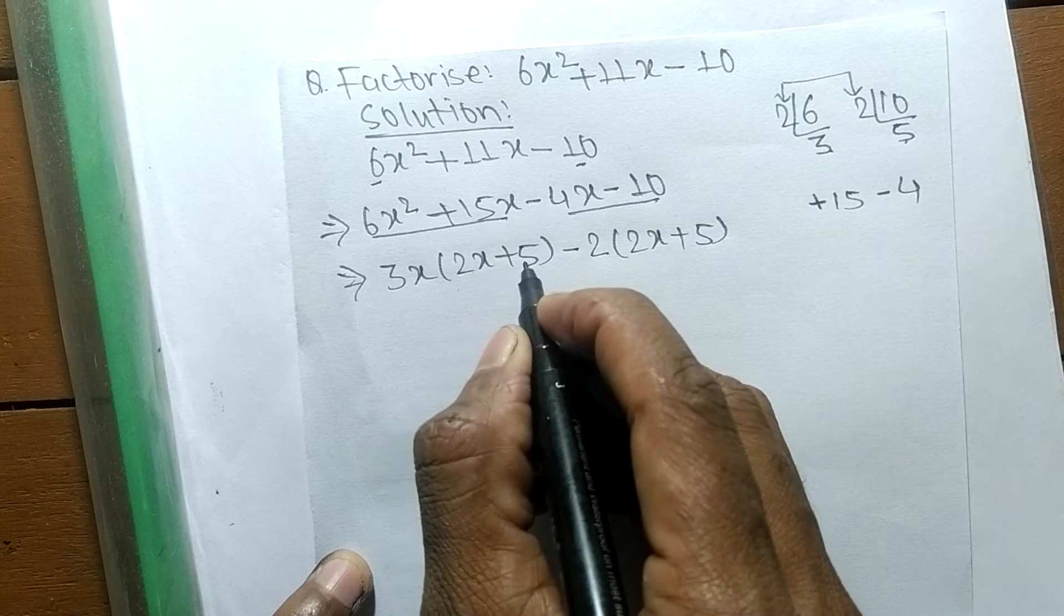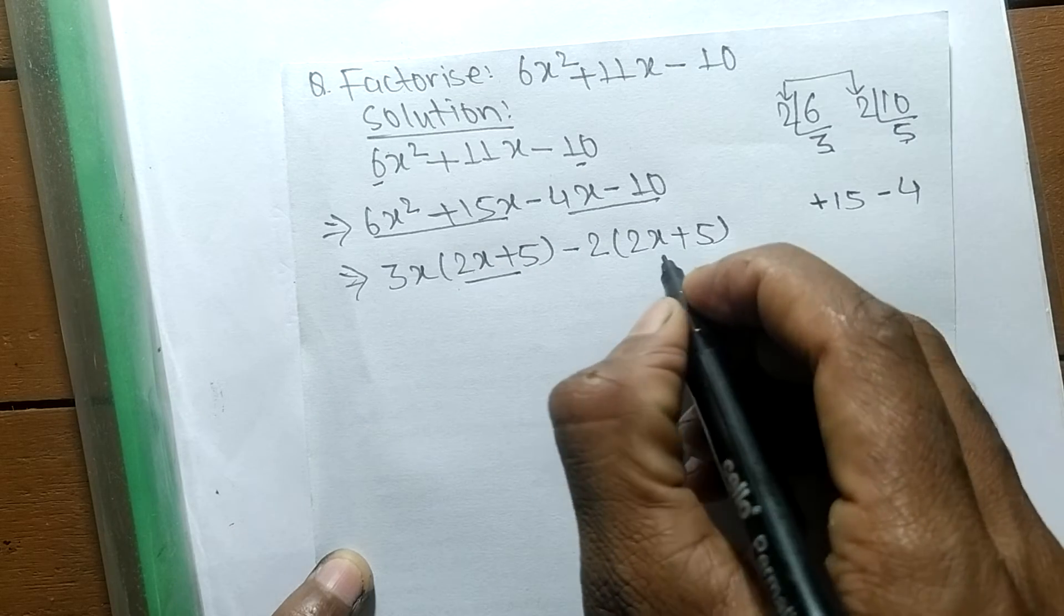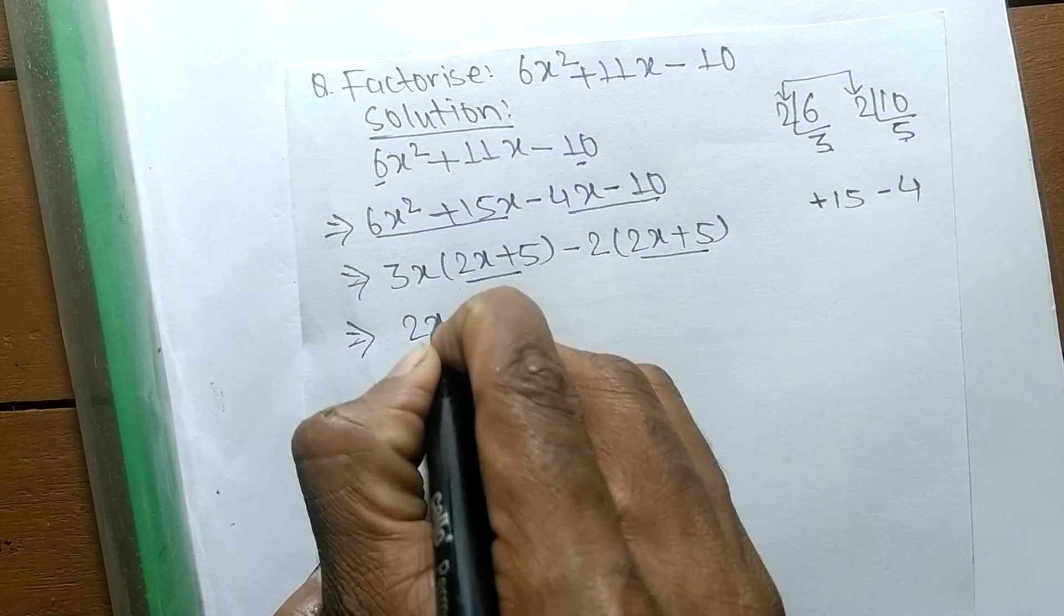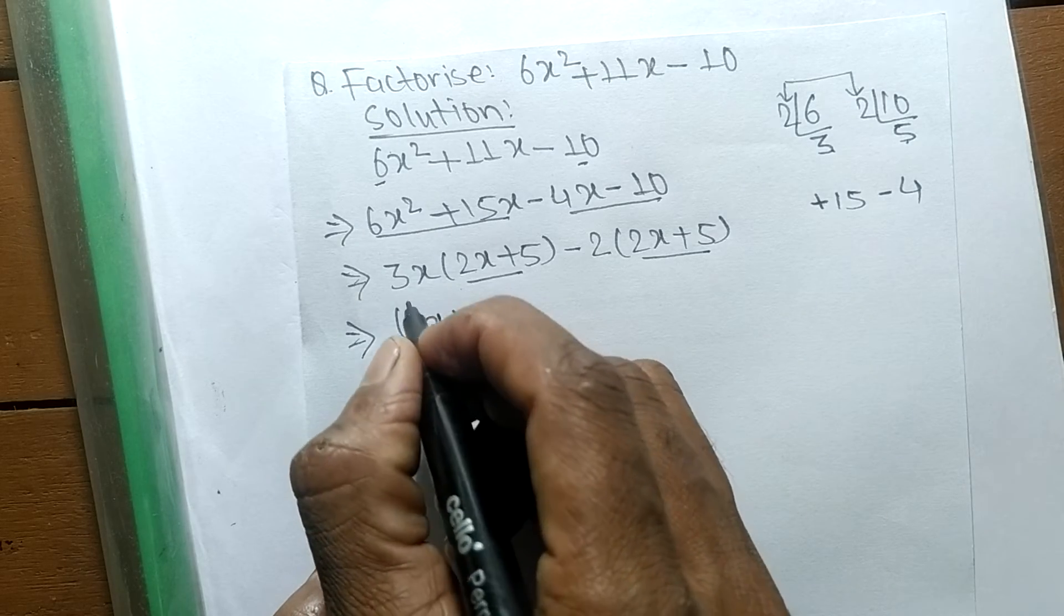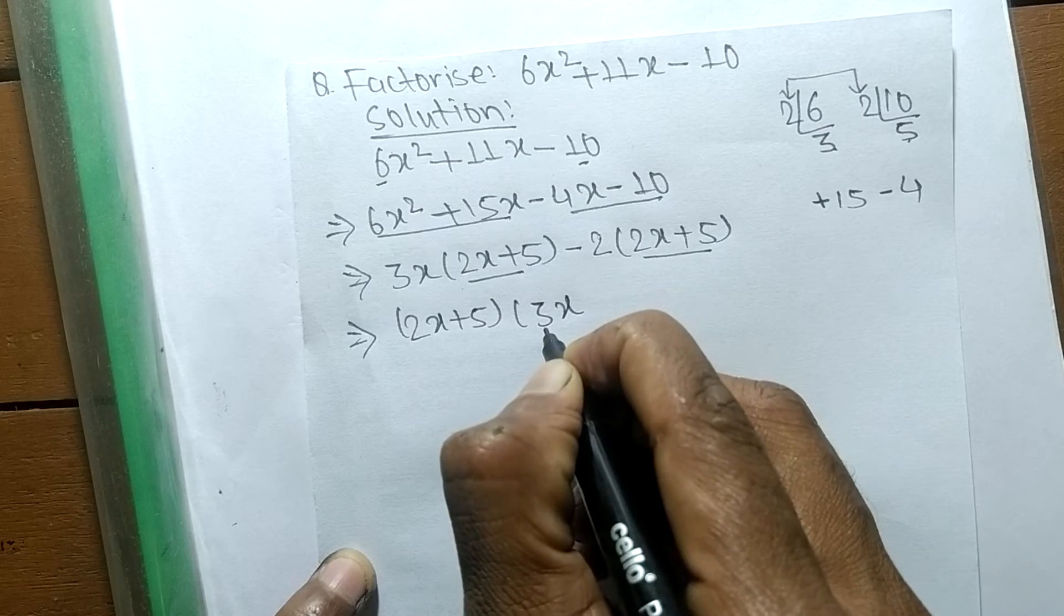In the first expression there is 2x + 5, and in the second one there is 2x + 5. So we can take 2x + 5 as common. The remaining in the first expression is 3x, and in the second expression is -2.